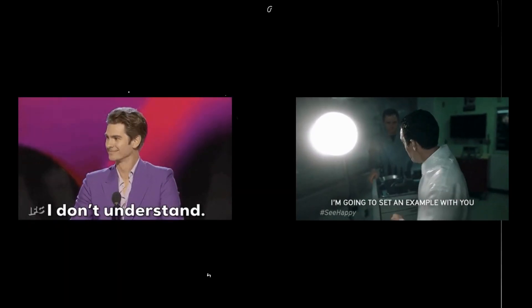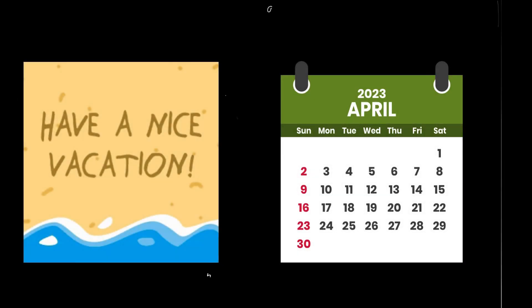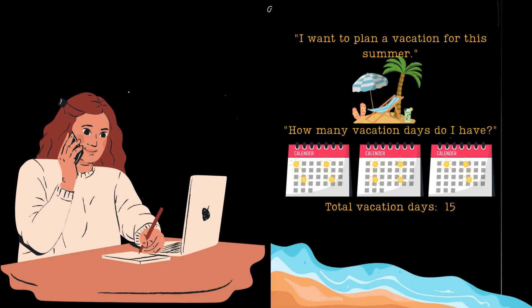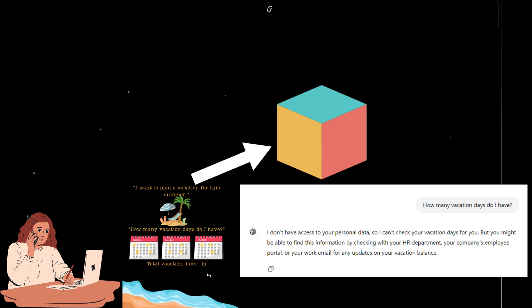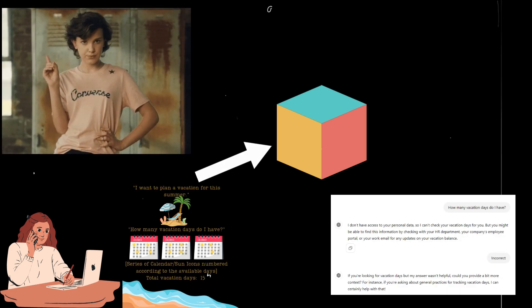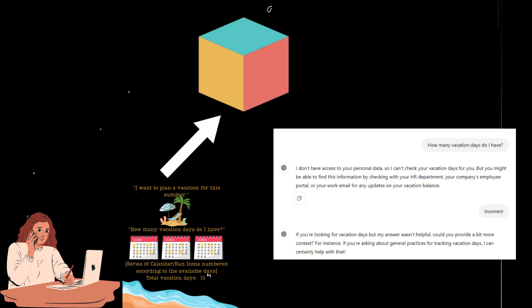Let's take a concrete example to illustrate this point. I want to plan a vacation for this summer, and I want to know how many vacation days are at my disposal. What I can do is take my query, feed that into a model that can generate a response. How many vacation days do I have? I'm afraid I don't have the answer to that question. I'm not connected to your employer's systems. We can all expect that this answer will be incorrect because the model doesn't know who I am and does not have access to this sensitive information about me.